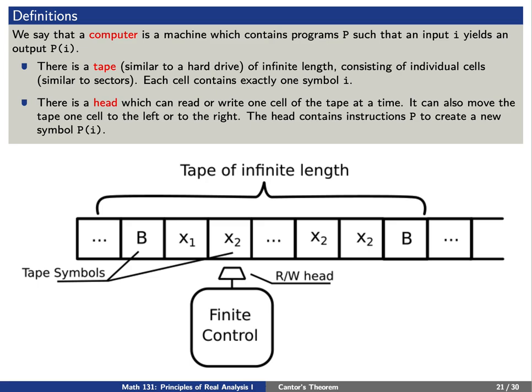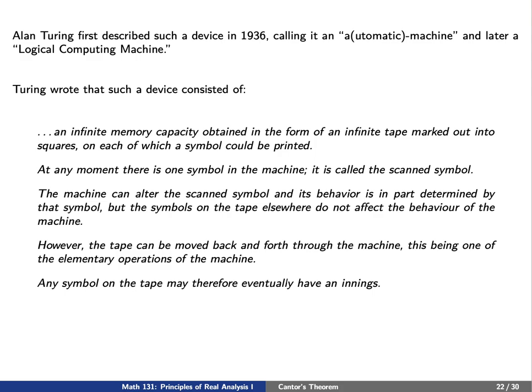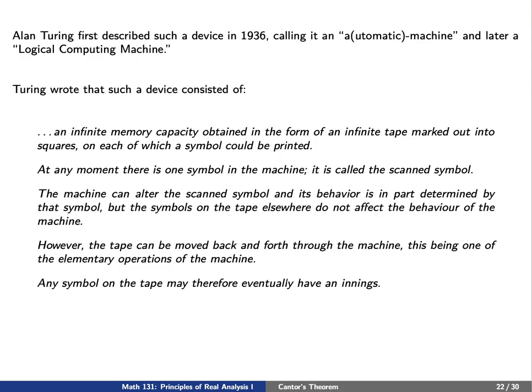Here's a diagram so you can see how this works. You have a tape, which for all intents and purposes will be of infinite length. Inside this tape, at every cell, we have a symbol — the symbols could be x₁, x₂, maybe b. We also have a head, which can move to the left or to the right, and can either read or write into a cell. Turing first described such a device in 1936, calling it an automatic machine and later a logical computing machine. He described it as having infinite memory and the ability to read and write one symbol at a time. Nowadays, we call this simplified idea of a computer a Turing machine.